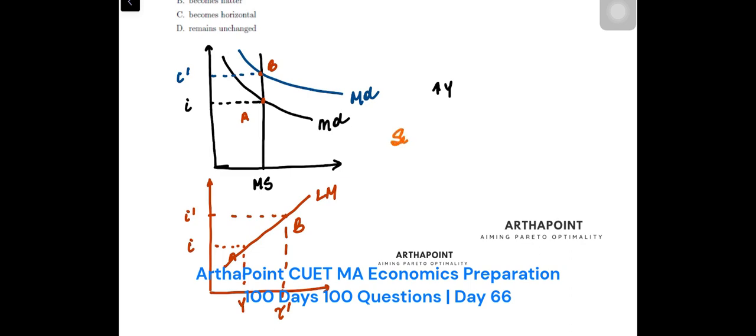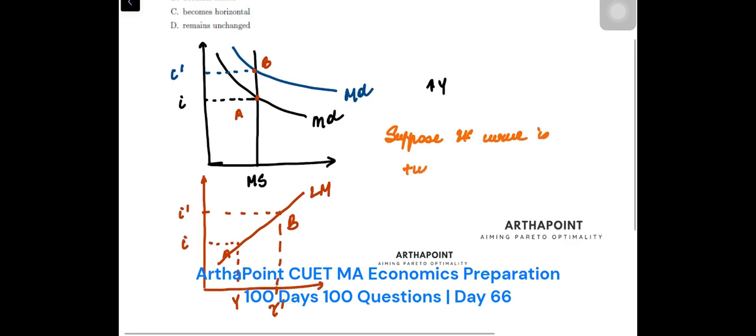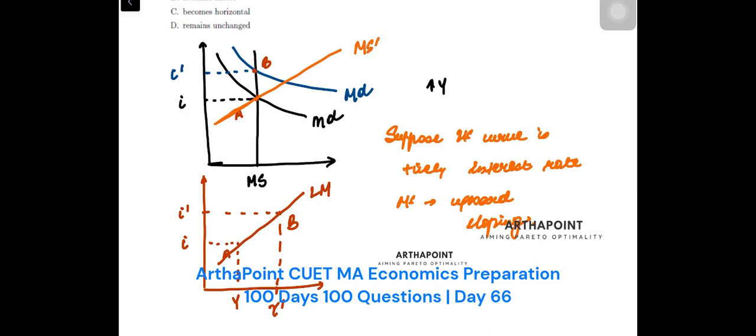Which means that your money supply curve becomes upward sloping. So your money supply curve is this, this is your money supply curve, not horizontal.